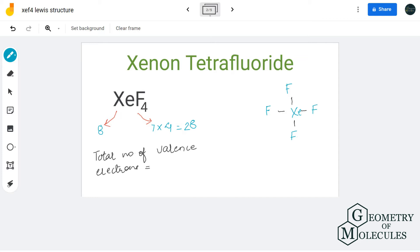Once we know that, we'll put xenon in the center as it's the least electronegative atom in this molecule. After doing this, let's place all fluorine atoms around the central atom.